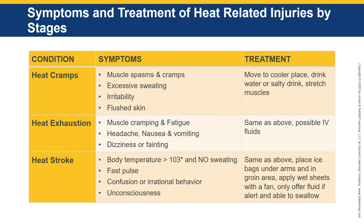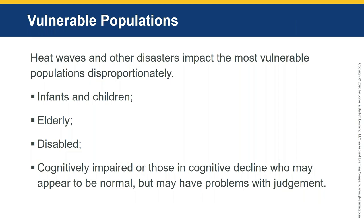Our vulnerable populations: infants and children are more vulnerable than others, but there's also the elderly and the disabled. Think about assisted living and independent living facilities which are multi-floor — the electricity goes out, you have no elevator, compound that with isolation issues and cognitive decline. These make for very vulnerable populations, so as a healthcare manager keep these in mind when you make plans to deal with heat disasters.